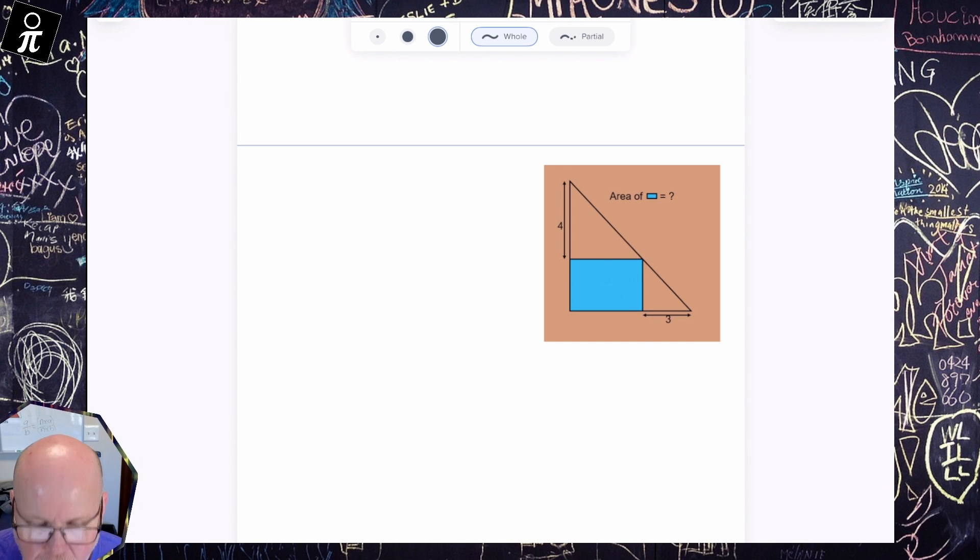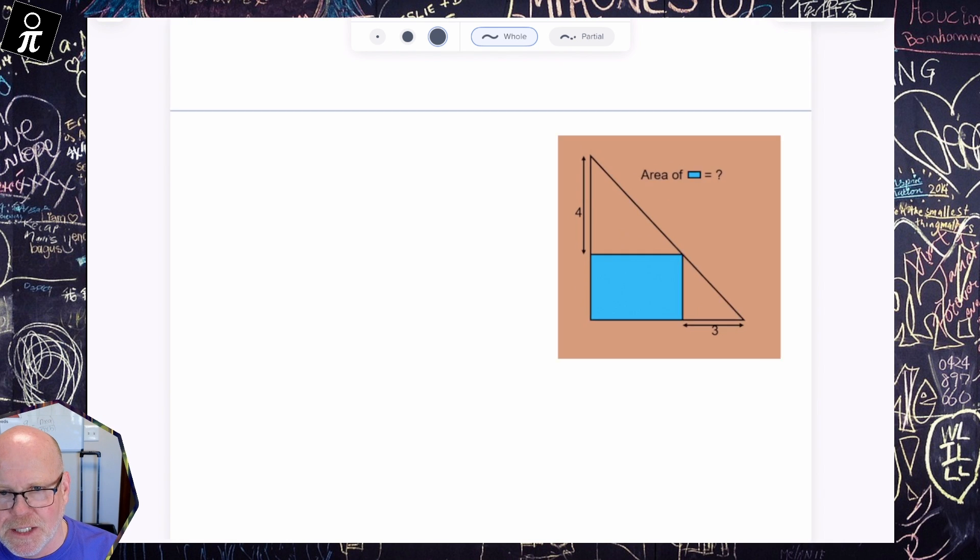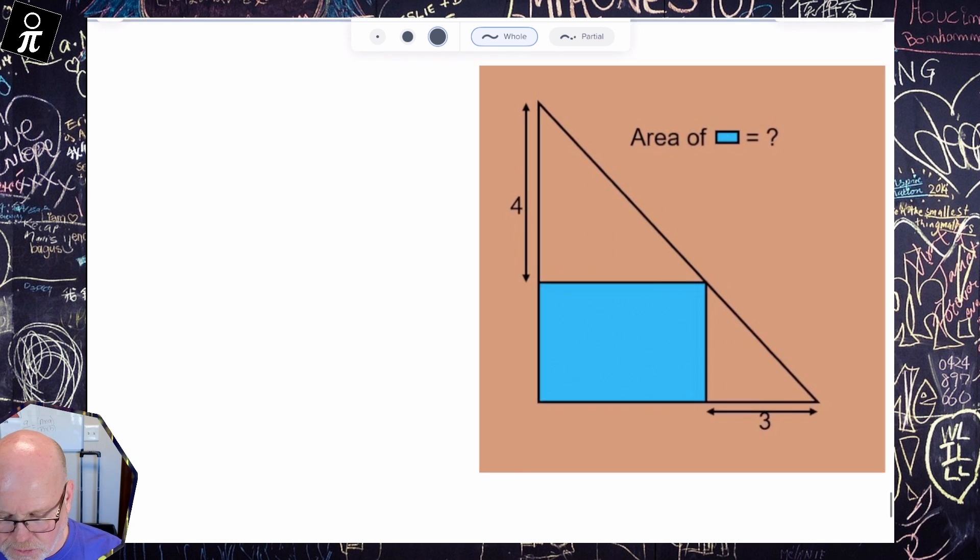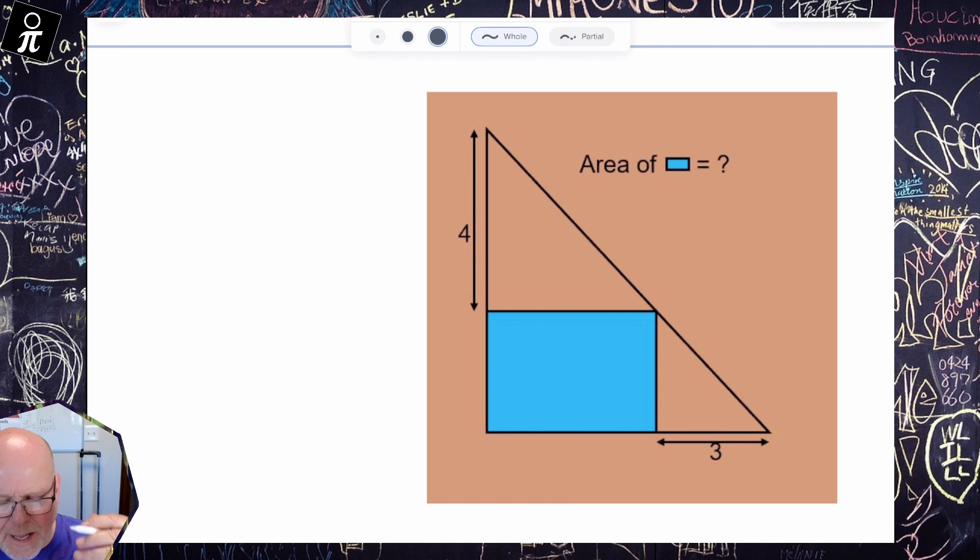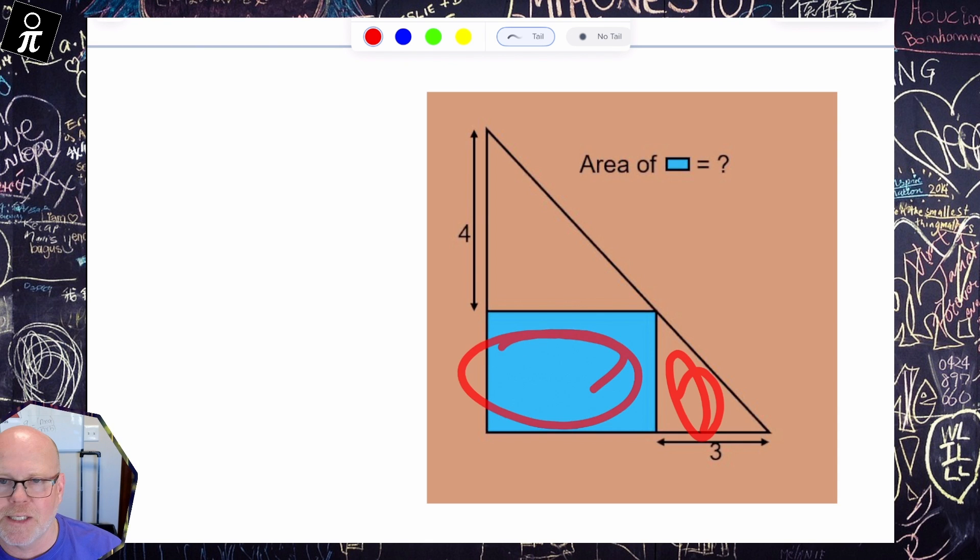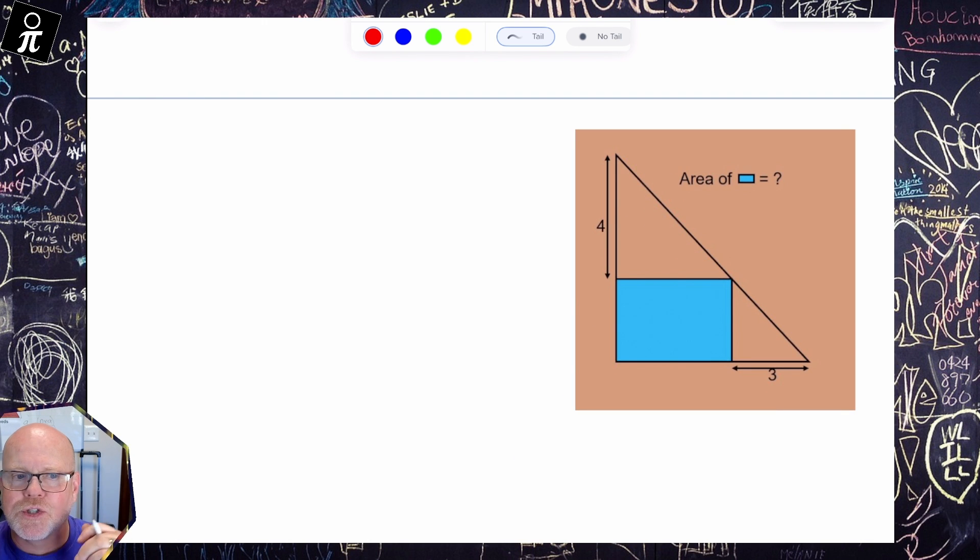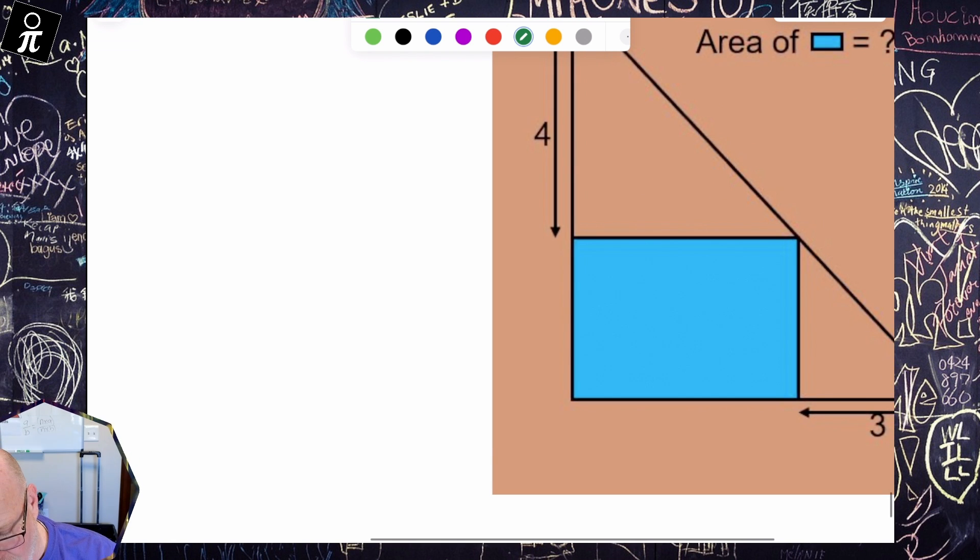All right, so let's take a look at this. So what we've got going on here is we've got this triangle and it's broken up into three pieces. You could see we've got a triangle up at the top, triangle down at the bottom, and then a rectangle in the middle. And so we can find the area of this triangle, the big triangle, in two different ways. So the first way that we could do it is we could say, well, I don't know what this length is, but let's call it A. I don't know what this length is, but let's call it B.